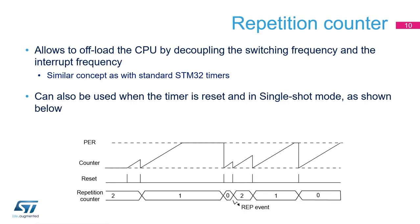Each timing unit includes a repetition counter similar to the ones available in standard STM32 timers. It allows offloading of the CPU by decoupling the switching frequency and the interrupt frequency. The counter rollover interrupt can be issued every single, second, third, and up to 256th PWM period. This feature is available both for continuous and single-shot modes; in the latter case, the repetition counter is decreased on each reset event.